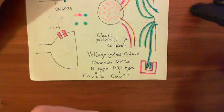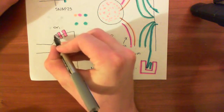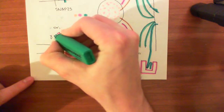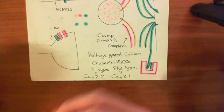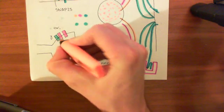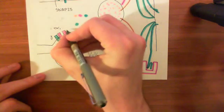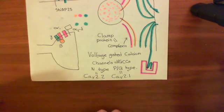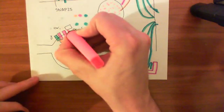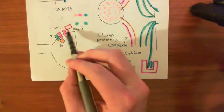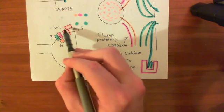Voltage-gated calcium channels have more than just the alpha-1 subunit — they have a bunch of other subunits stuck onto them as well. One is the gamma subunit, shown here in turquoise. Down here we have the beta subunit, shown in orange. And finally there is the alpha-2-delta subunit up here. It's called the alpha-2-delta subunit because it actually consists of two parts: the alpha-2 subunit is the box at the top, and the delta subunit is the portion that spans the membrane.